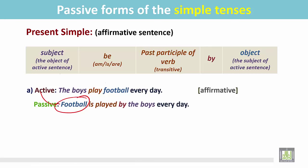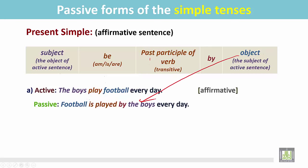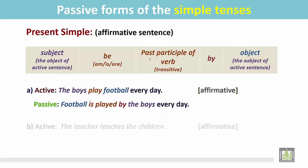'Football' — this was the object of the active sentence and now it becomes the subject. Add the be verb: 'football' is singular, so add 'is.' Then add the past participle form of the verb from the active sentence: 'played.' After that, add the preposition 'by,' then the object, which was the subject of the active sentence. Result: 'Football is played by the boys every day.'